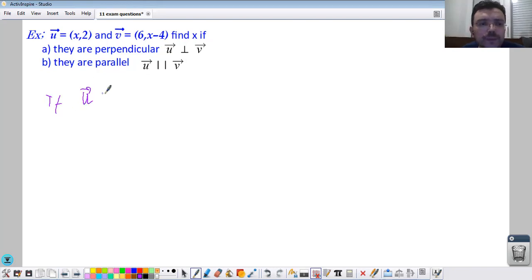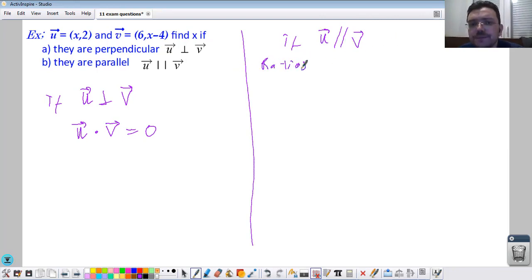If they are parallel, the ratios must be the same. So y1 over x1 should be equal to y2 over x2.